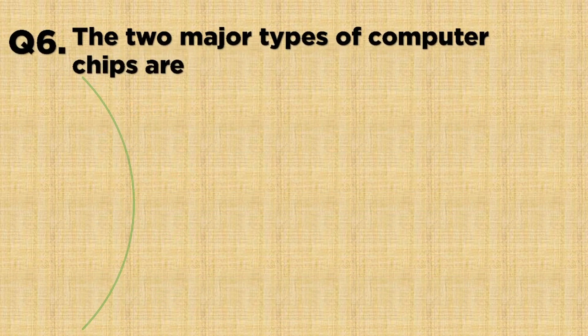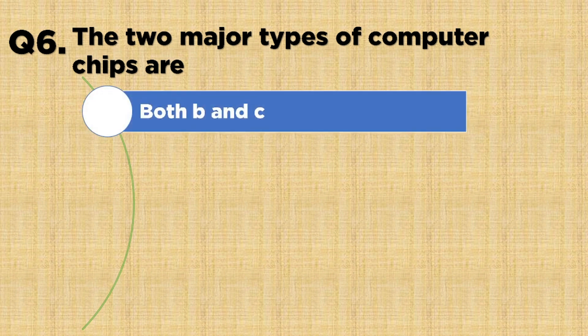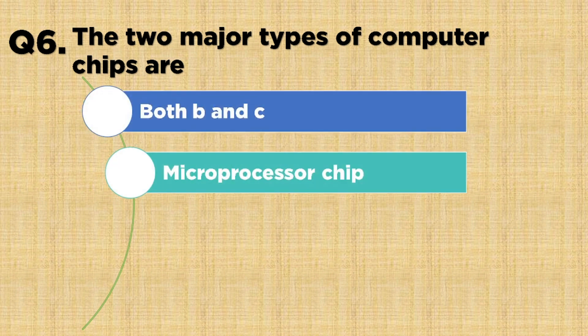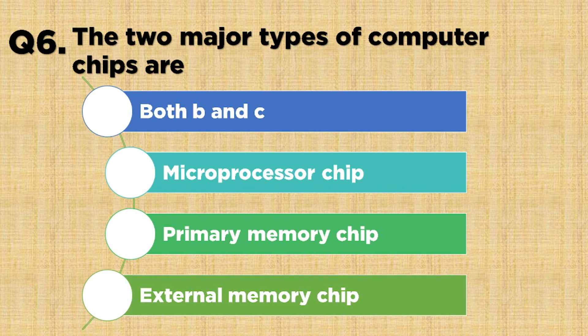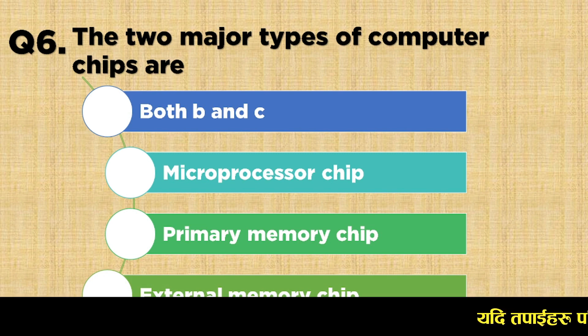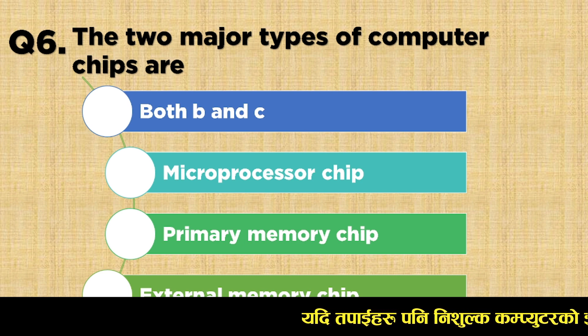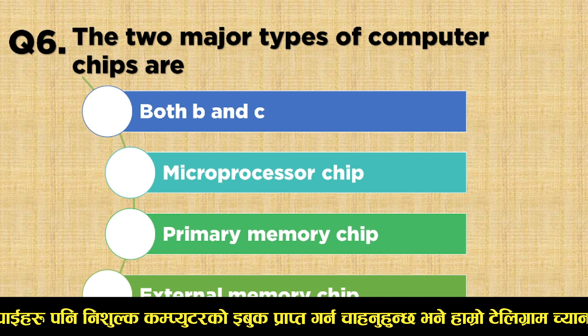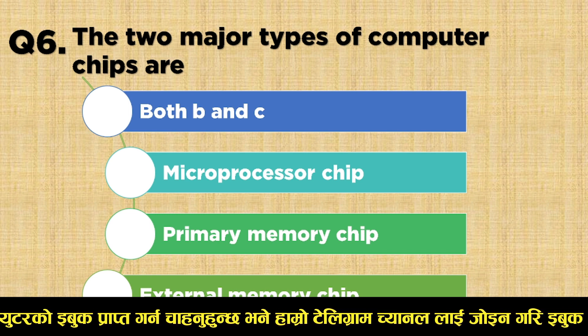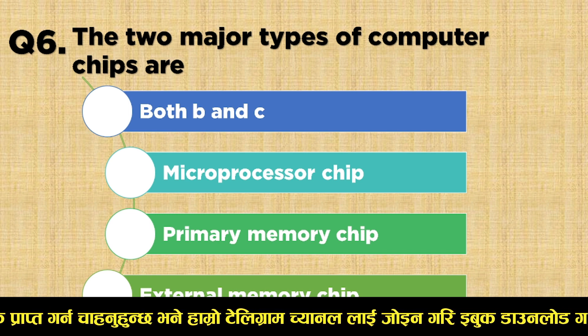Question number 6: The two major types of computer chips are — Option A: Both B and C, Option B: Microprocessor chip, Option C: Primary memory chip, Option D: External memory chip. The correct answer is Both B and C — that is, microprocessor chip and primary memory chip.